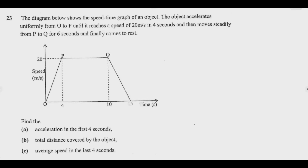The question is: the diagram below shows the speed-time graph of an object. The object accelerates uniformly from O to P until it reaches a speed of 20 meters per second in four seconds, then moves steadily from P to Q for six seconds, and finally comes to rest. Find: A) the acceleration in the first four seconds, B) the total distance covered by the object, C) the average speed in the last four seconds.